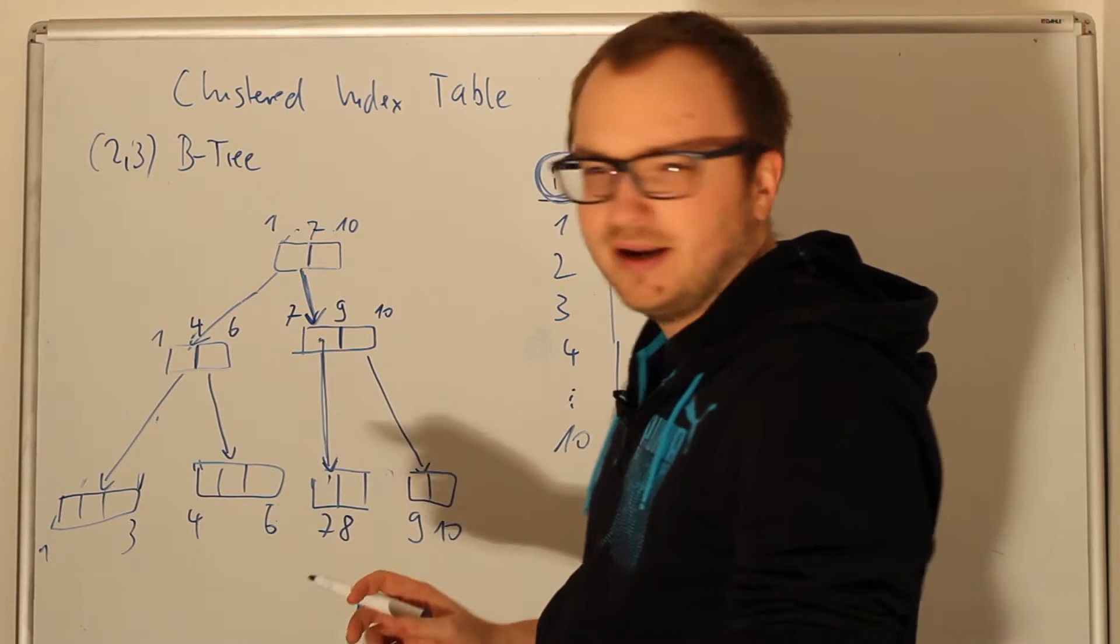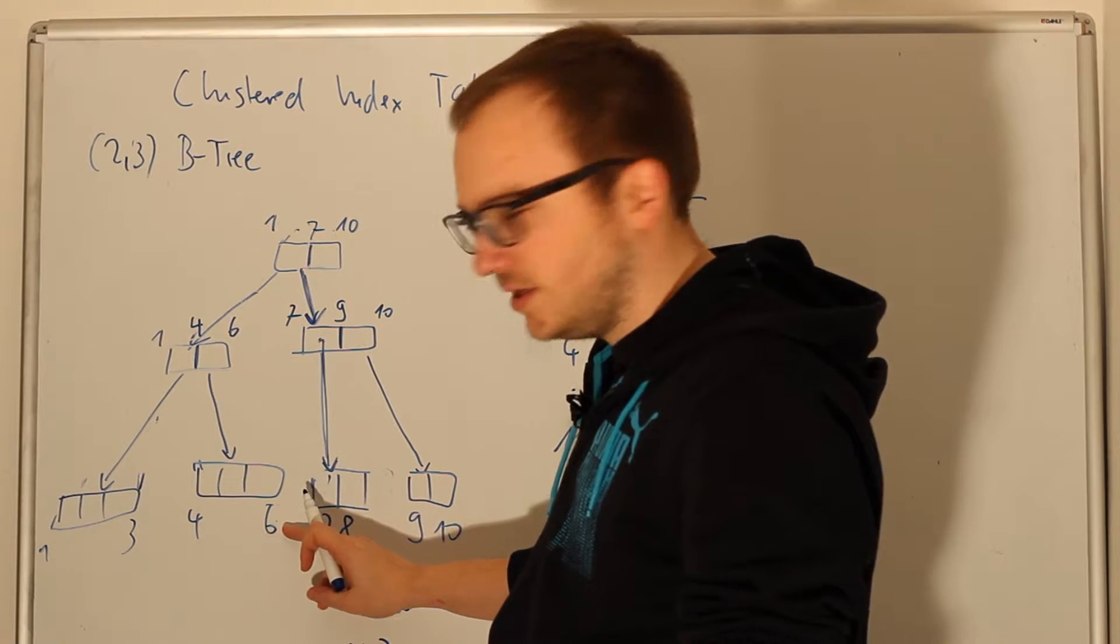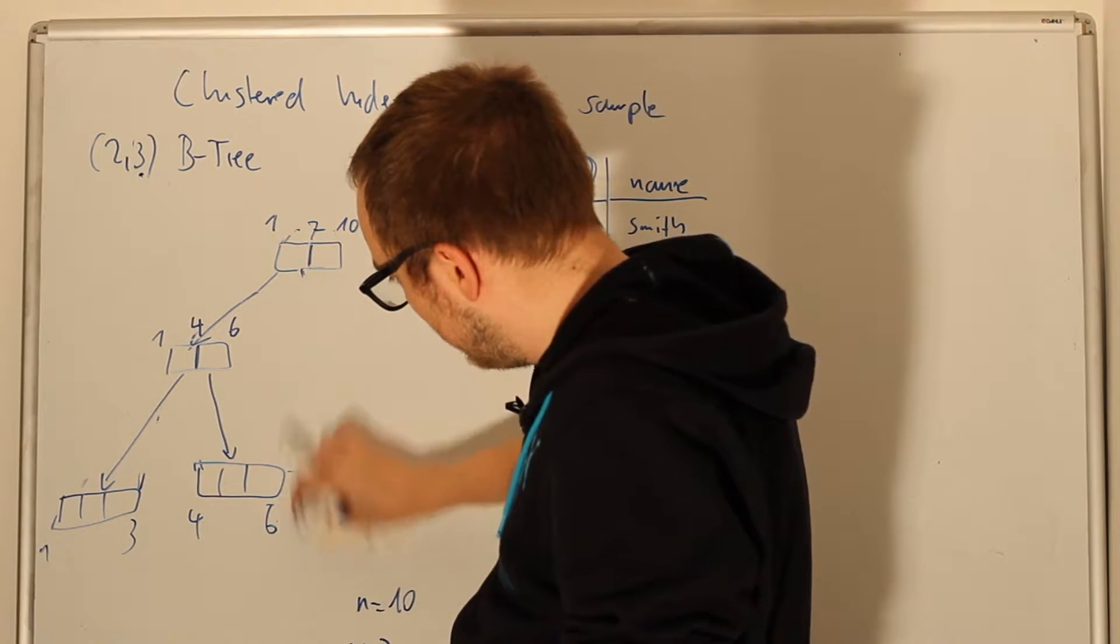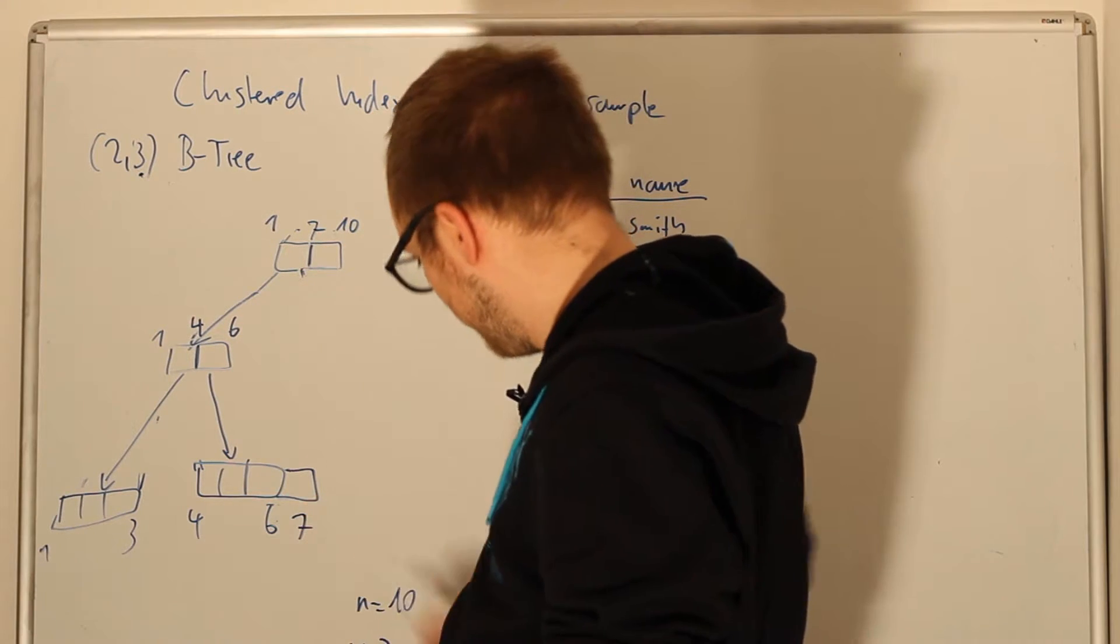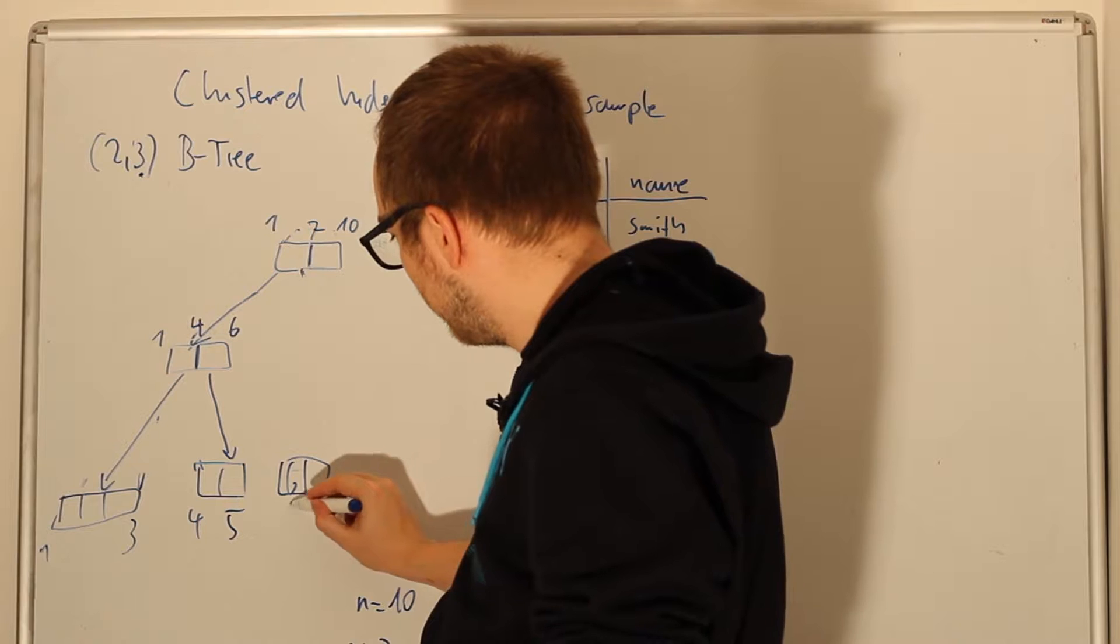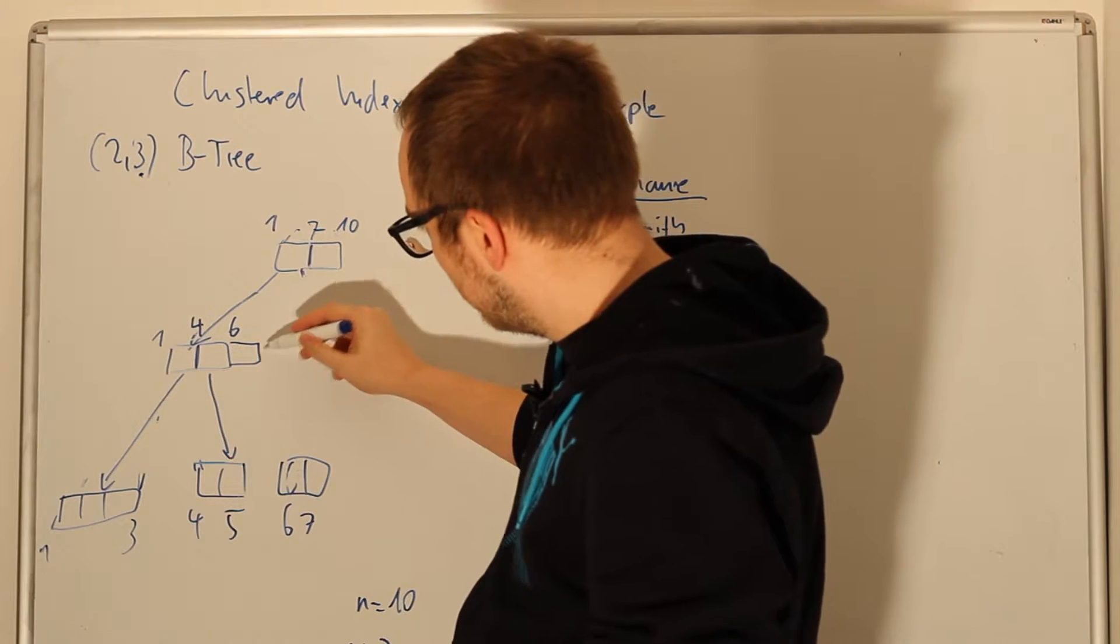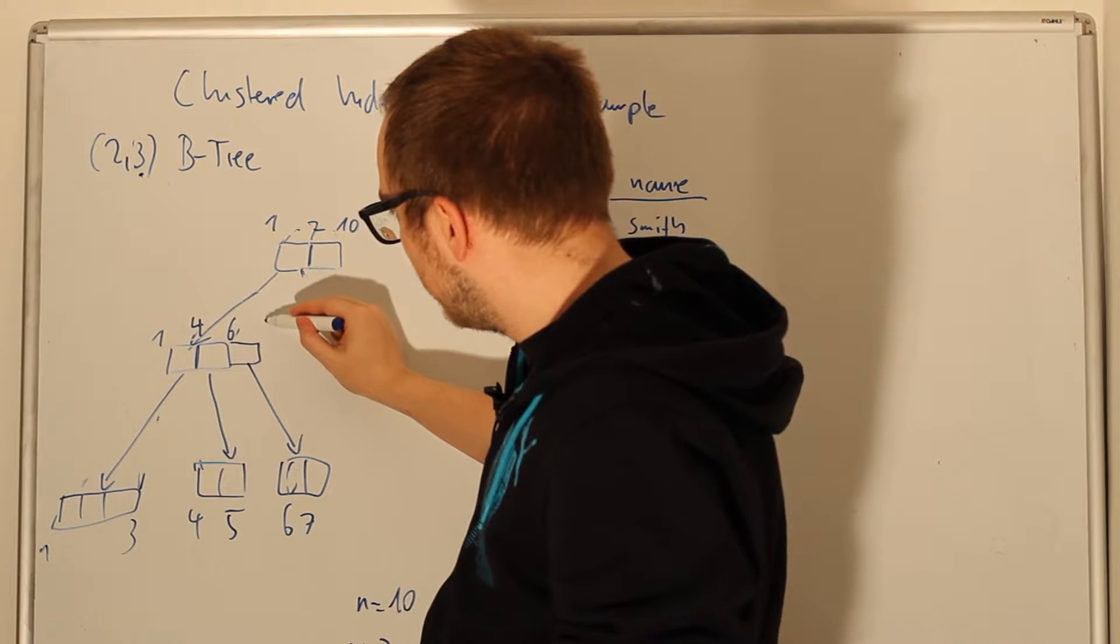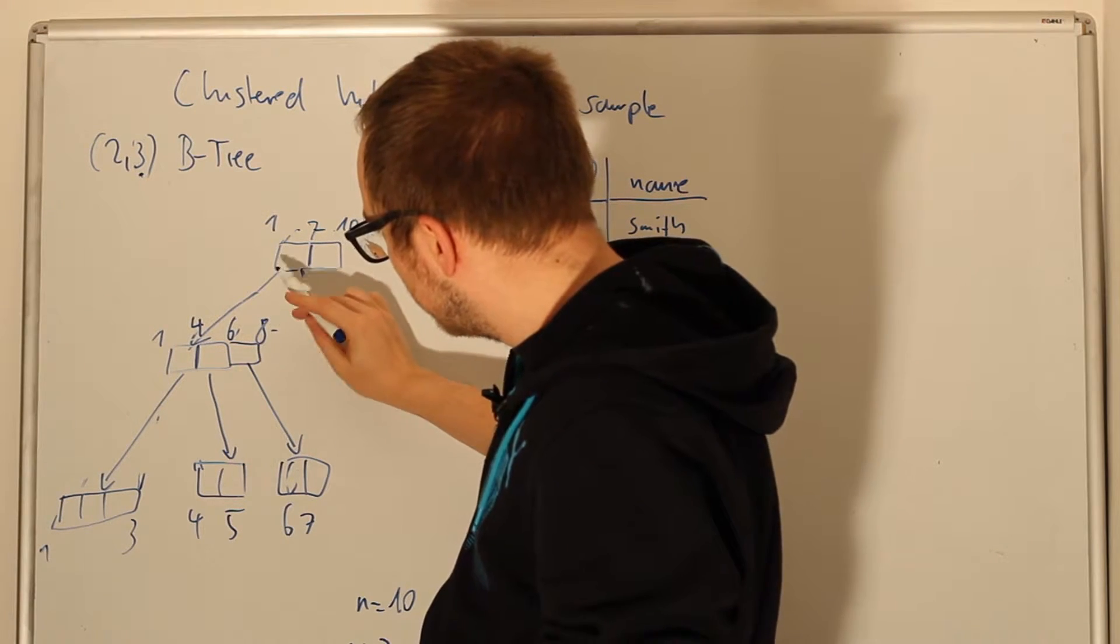It gets complicated when you want to insert or delete data. If we're inserting, say a 6 here, we would have to add it, but since it's an overfilled node we have to split it. So what happens is we split this node into two nodes—we have 4, 5, and 6, 7. Then we also need to update the intermediate node, so it gets another bucket, another reference, and we have to change this.